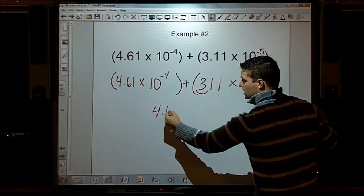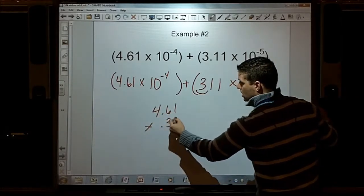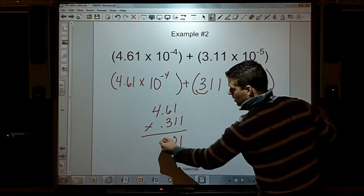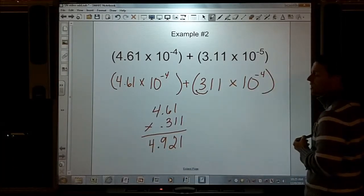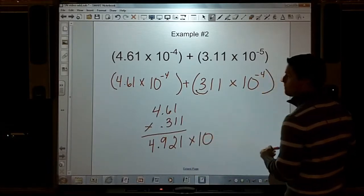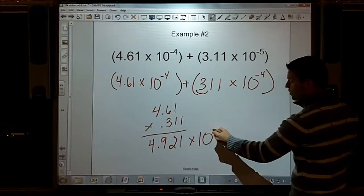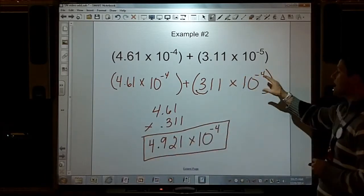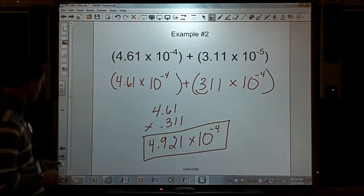4.61 plus .311, that's 4.921 times 10 to the negative fourth. They had the same exponent, so I can add them together.